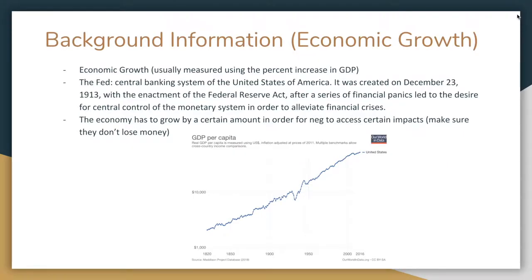Now let's talk about economic growth. Like mentioned earlier, it's usually measured using percent increase in GDP. The Fed — the central banking system of the United States — is another important aspect, as it leads to central control of the monetary system and regulates economic growth. Also worth noting: looking at a chart of per capita GDP, the overall per capita GDP of the United States has been exponentially increasing — regardless of what recessions we have, on net the overall per capita GDP has been increasing. You can always argue that when you have economic growth, the average person is going to be better off.